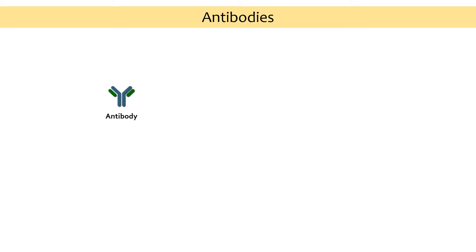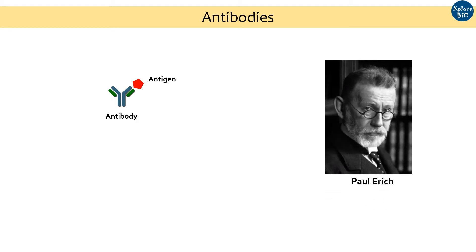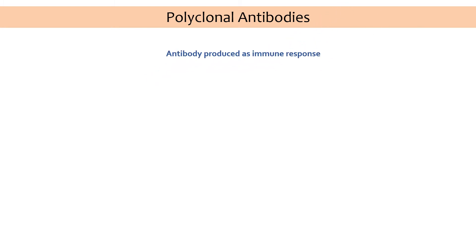The antibodies are highly specific for their targets known as antigens. The idea that some molecules — which were later named as antibodies — can be designed to selectively target disease-causing agents was first proposed by Paul Ehrlich. He called them magic bullets. Antigens are primarily proteins but they can also be polysaccharides or more complex conjugates with nucleic acids or lipids.